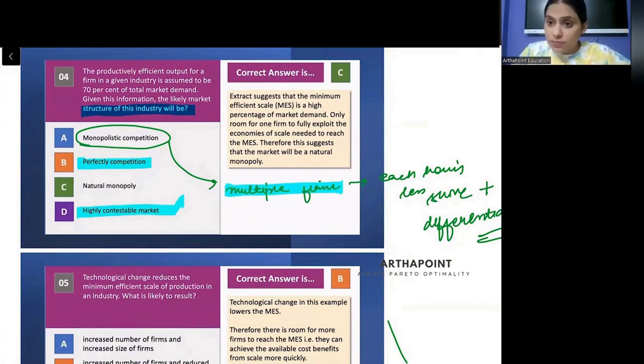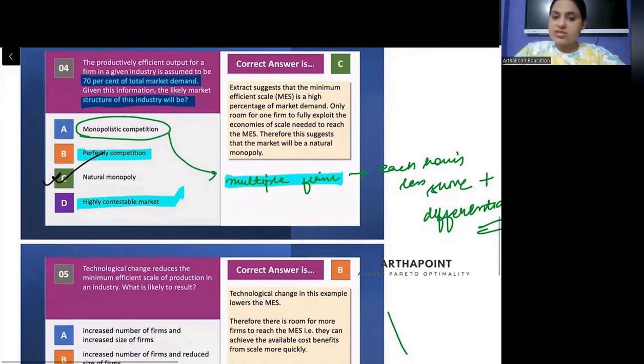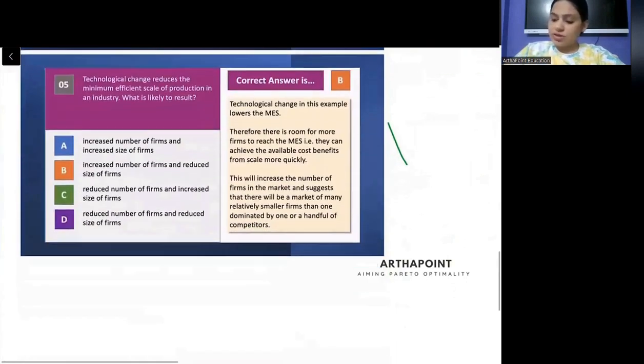But which market will have one firm having majority share? Monopoly, oligopoly. One or two firms have a lot of the market share. So 70% of total market one firm has. That represents natural monopoly. It has to be natural monopoly. So the answer to this question is C.